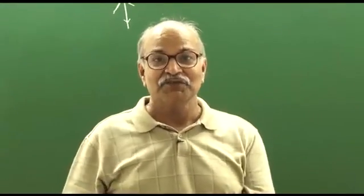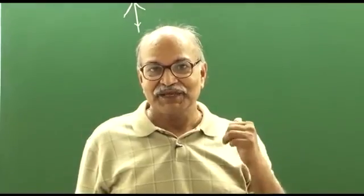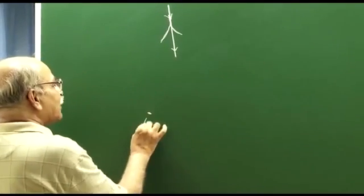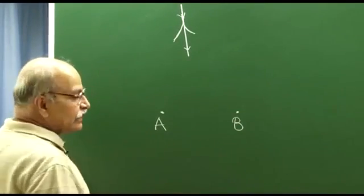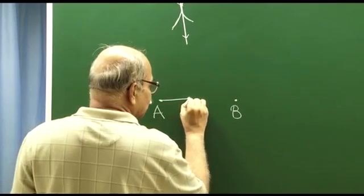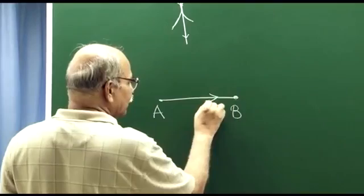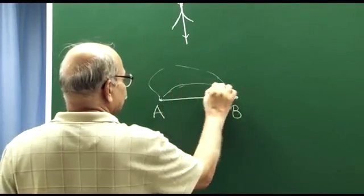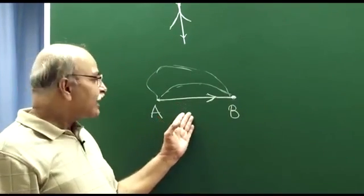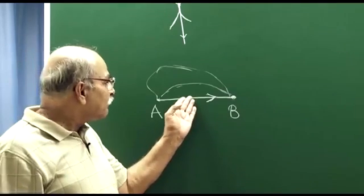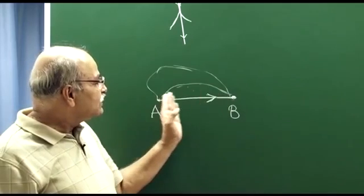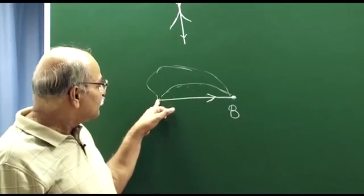Light going in straight lines has an interesting aspect. Suppose I have a point A and a point B, and the medium is homogeneous and isotropic. Light will take the straight line path from A to B, not a curved path. You can also say that light has taken a path which is the minimum length of all neighboring paths, or in terms of time, light has chosen a path which takes the least time to reach from point A to point B.